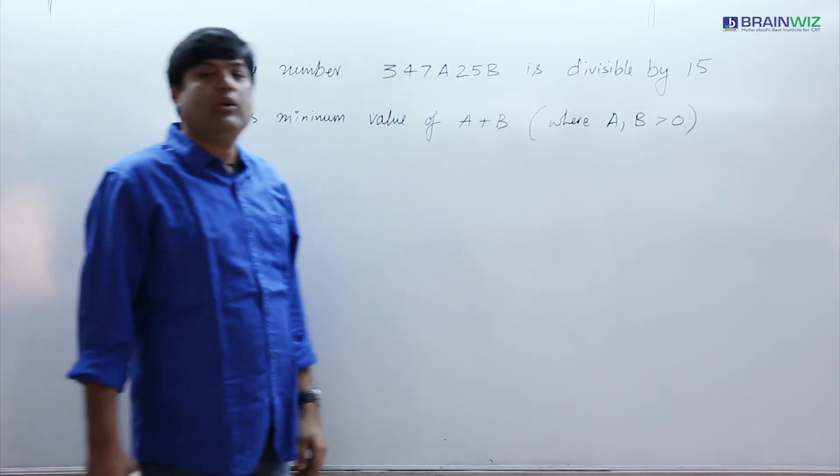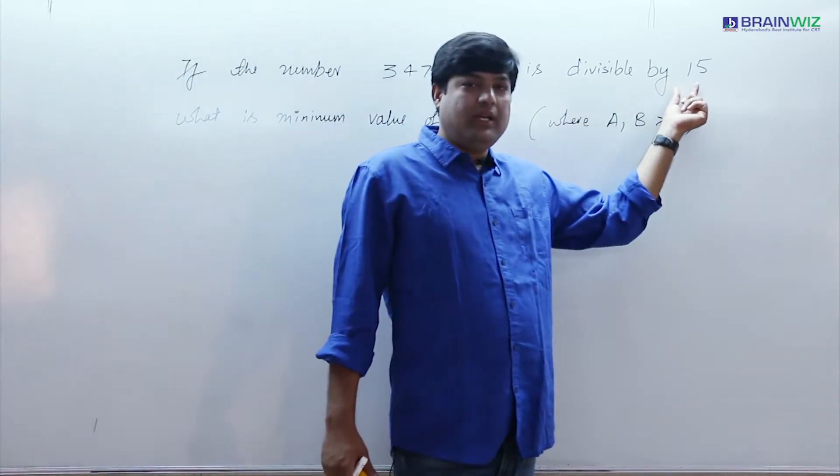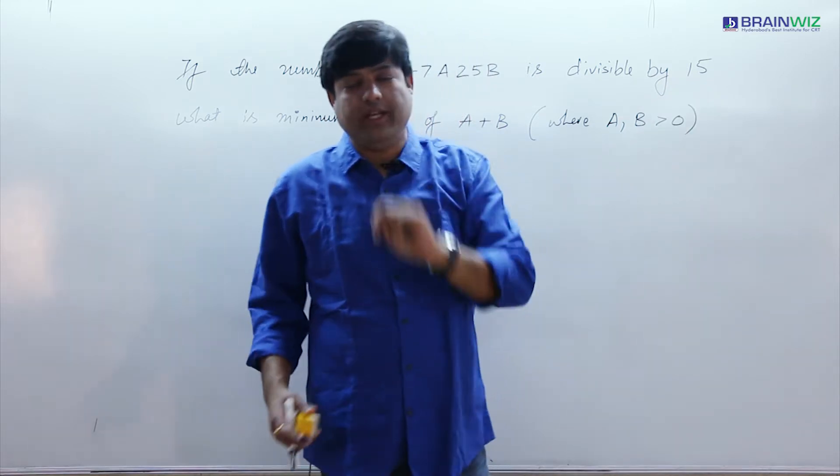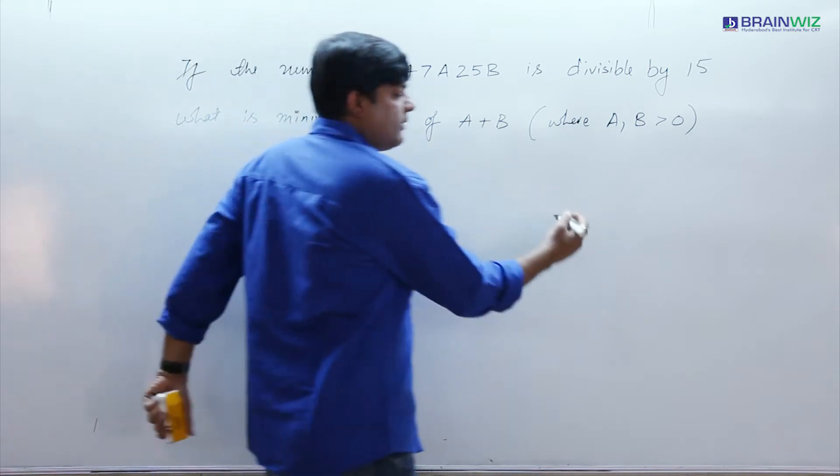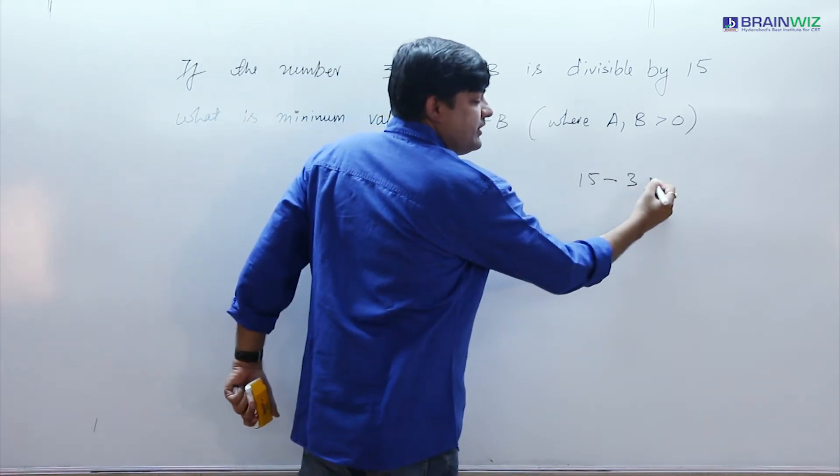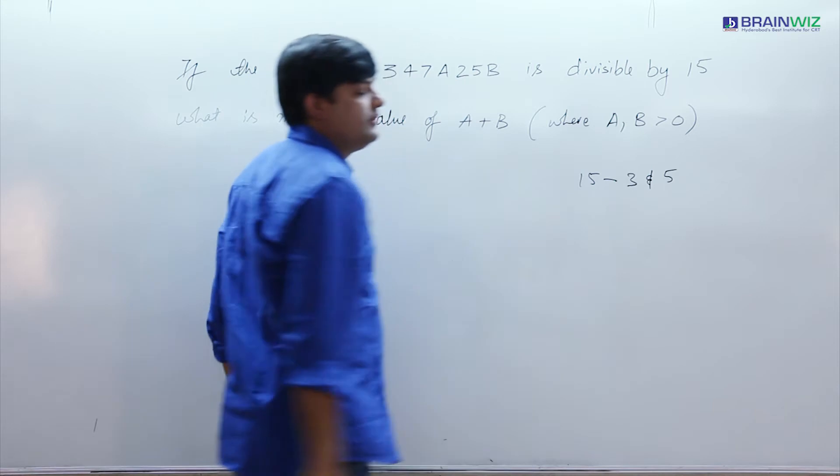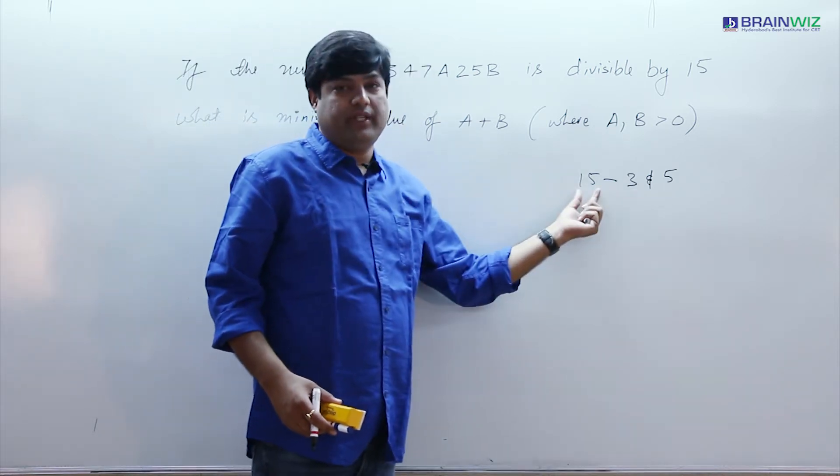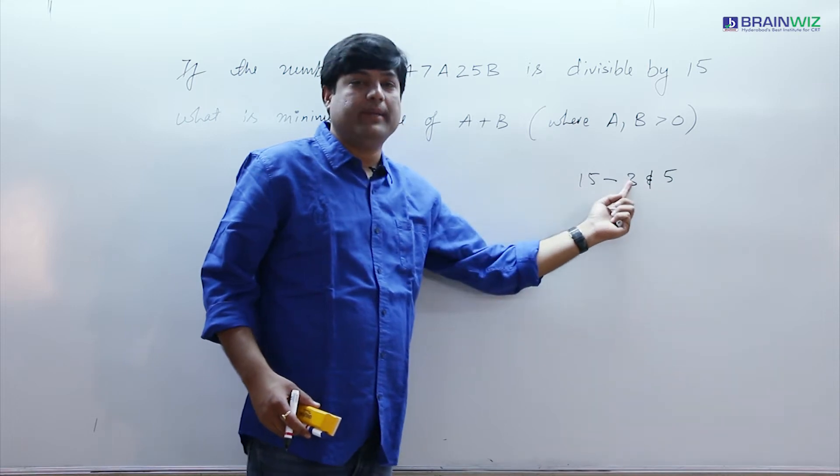Now basically when we talk about divisible by 15, as you know that a number should be divisible by 15, it has to be divided by two values. That it has to be divided by 3 and also divided by 5. If a number is divided by 3 and 5, definitely it is divided by 15 because these two are co-primes of 15.